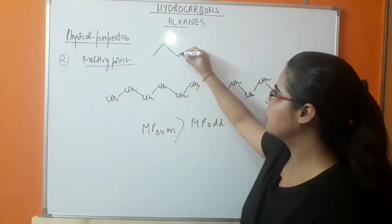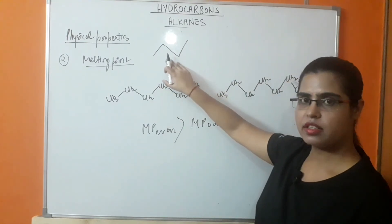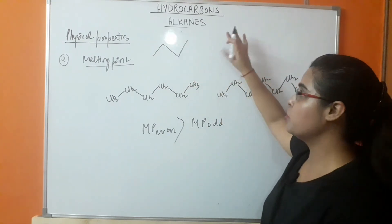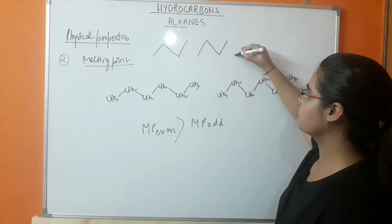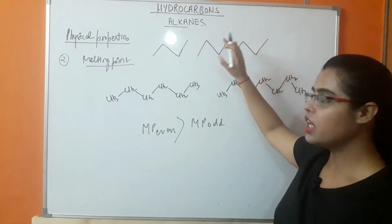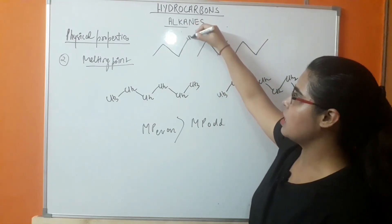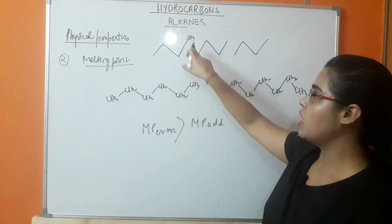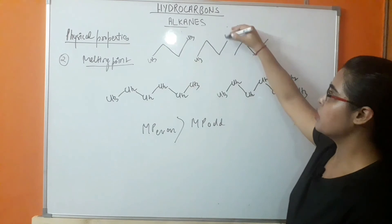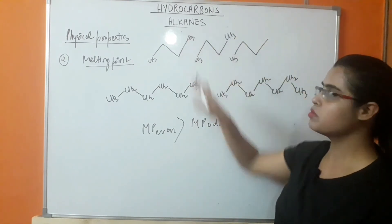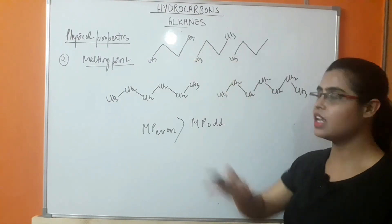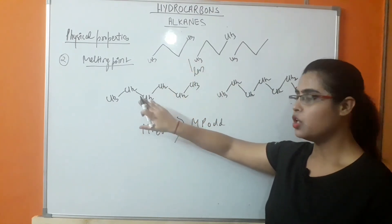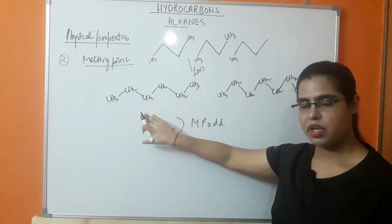For example, butane (even number of carbons) — in its bond-line formula, when packing is represented within adjacent molecules of butane, the terminal methyl groups of two molecules are in opposite directions. Because of this, the steric hindrance between adjacent methyl groups is very, very less. Therefore, packing is much more efficient in even number of carbons, resulting in a higher melting point.